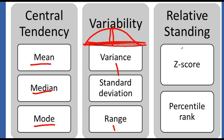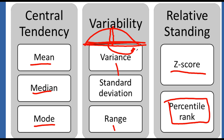Relative standing is trying to find out the location of a particular data point in comparison to other data points. That's where you have Z-score. A data point might be right here on the distribution — how many standard deviations is that away from the mean? Percentile rank is kind of just a conversion of the Z-score — this might be the 80th percentile, the 90th percentile, whatever. All of these different tools are used to answer slightly different questions.